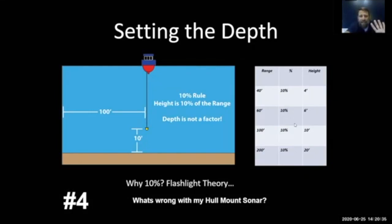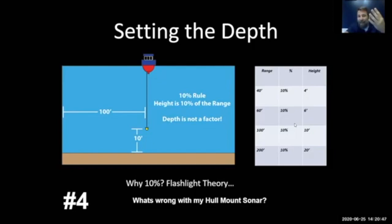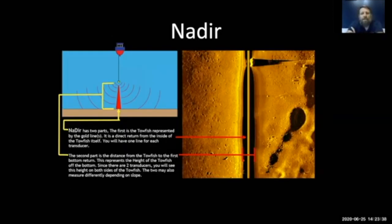That's the last of our four keys to getting good imaging: target, frequency, range, then depth. If you can master those four things, you will get good imaging out of any system you're using. Your nadir is what tells you the height of the towfish off the ground.